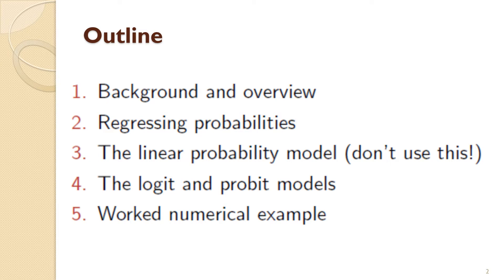We'll talk about three different probability regression models: one that you shouldn't use and two that you should. First, the linear probability model — please don't use this. For whatever reason it's quite popular in standard econometrics textbooks, but please don't use it. The more sensible models are the logit and the probit model — please use these. I'll give a worked example at the end, and note that logit and probit should give similar numerical answers because they are similar models.